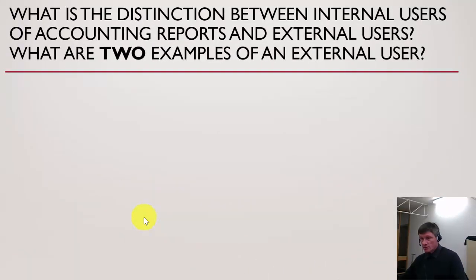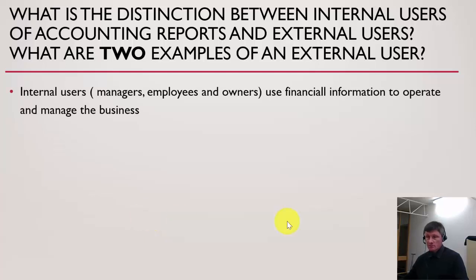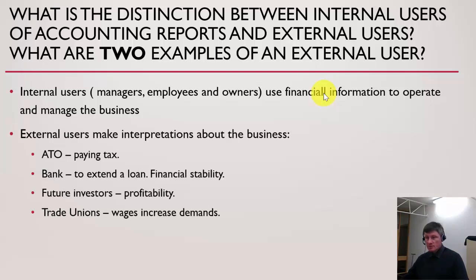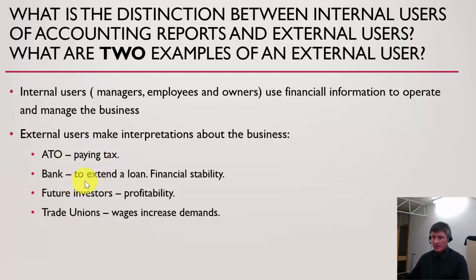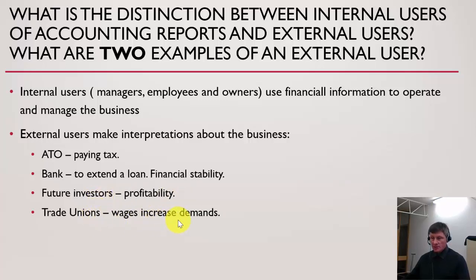The distinction between internal and external users: internal users — managers, employees and owners — use financial information to operate and manage the business. External users make interpretations about the business in their dealings with it. For example, the Australian Tax Office wants to know net income for tax purposes; banks want to assess financial stability and ability to repay loans; future investors want to know profitability and growth potential; and trade unions sometimes use financial information for wage demands.